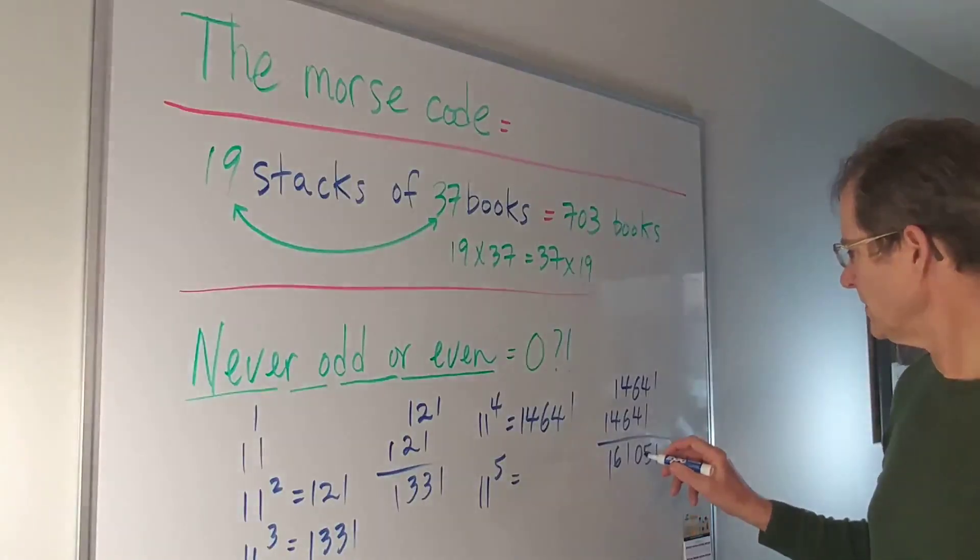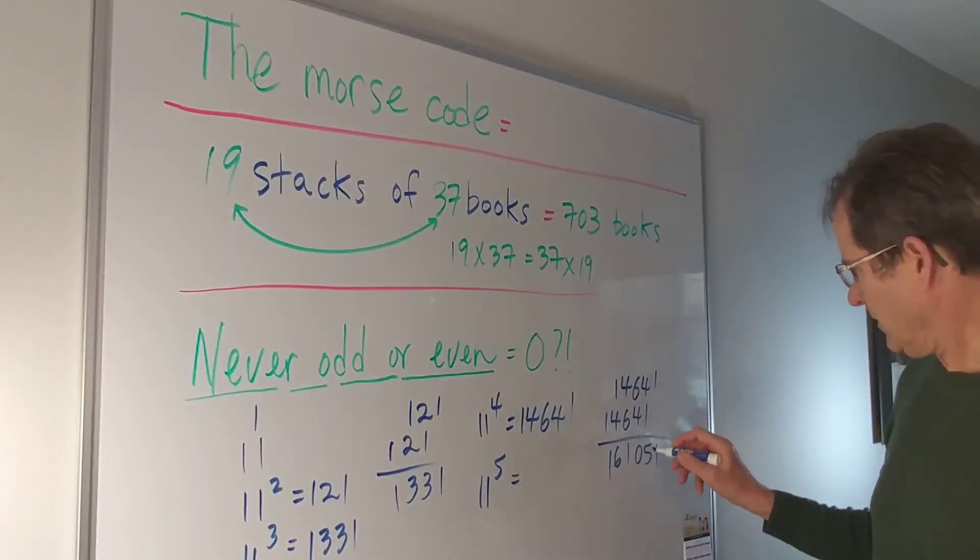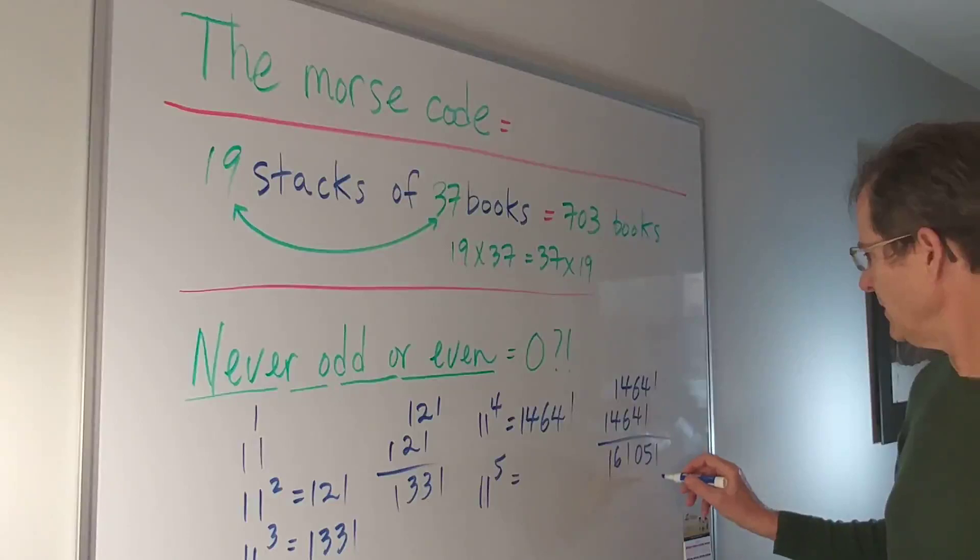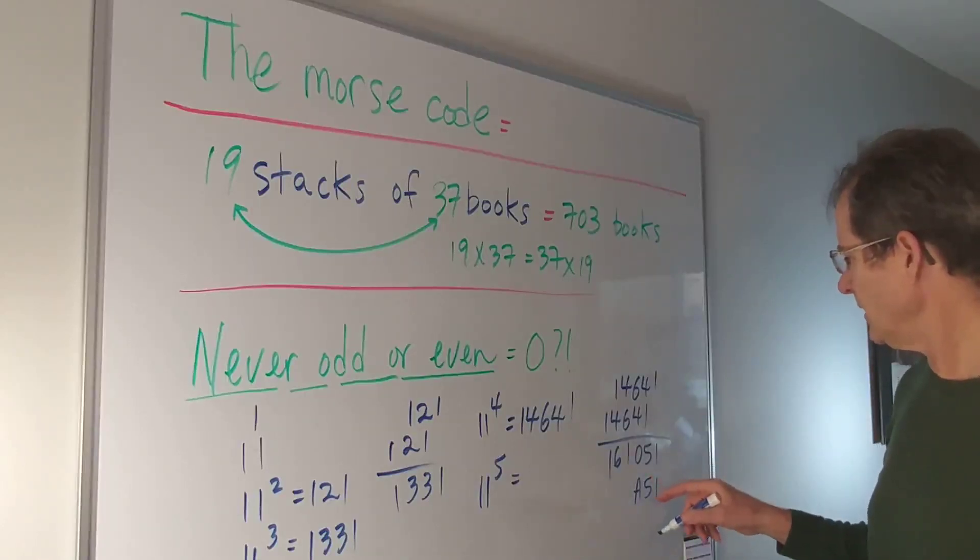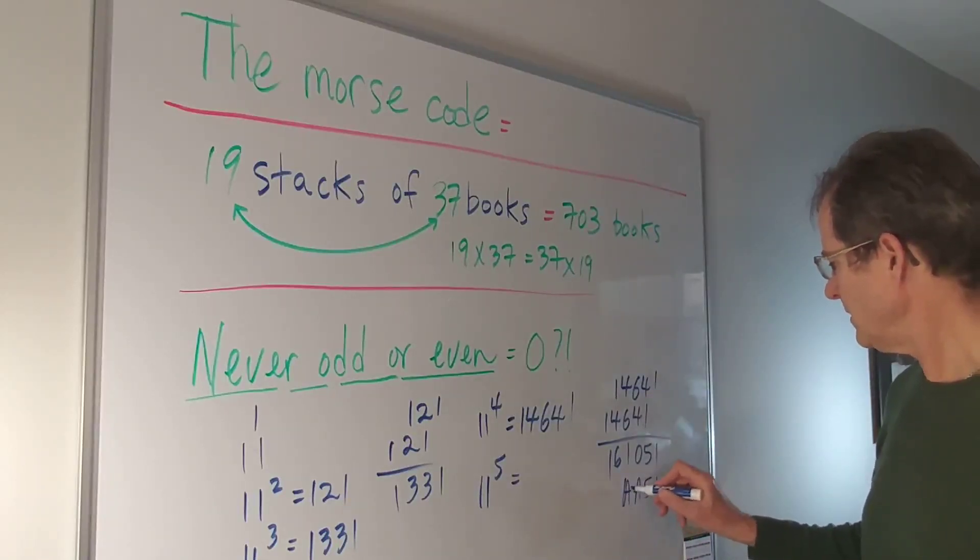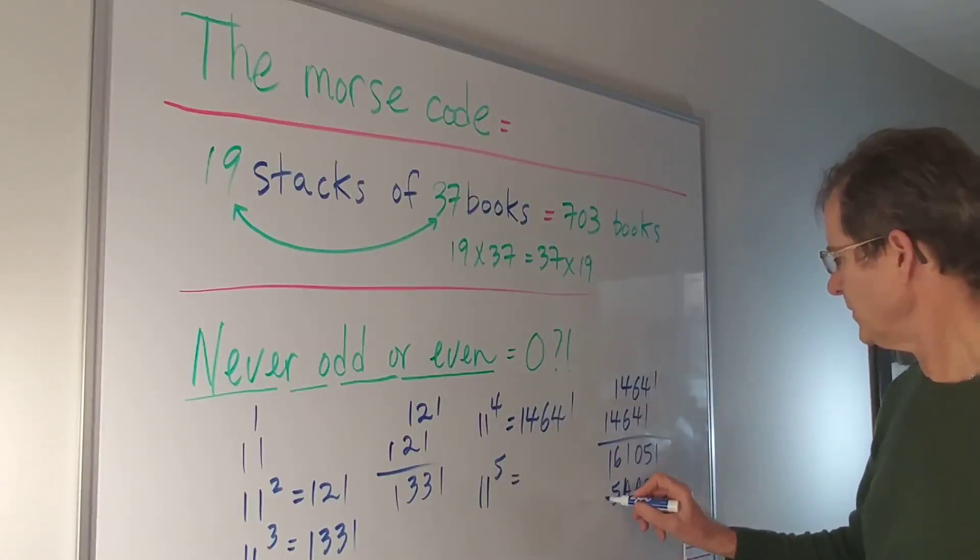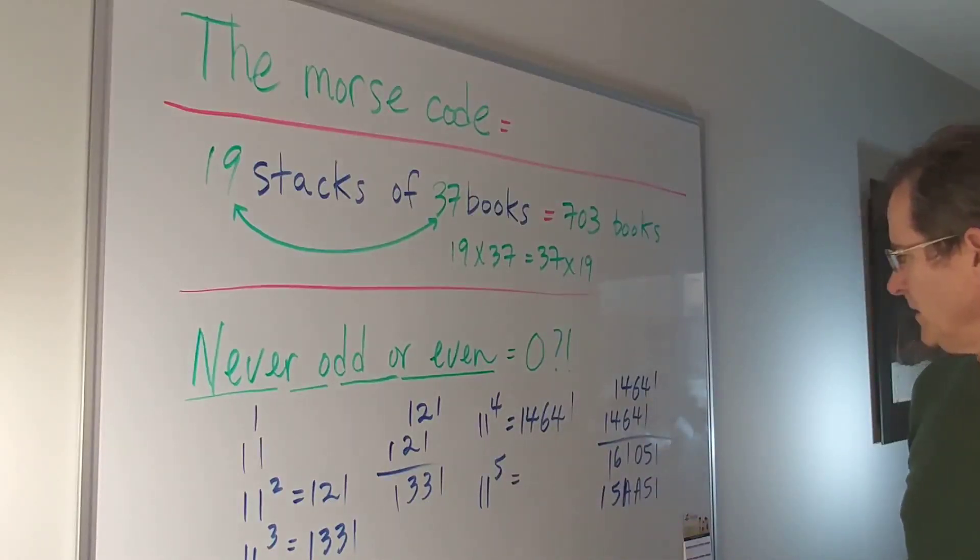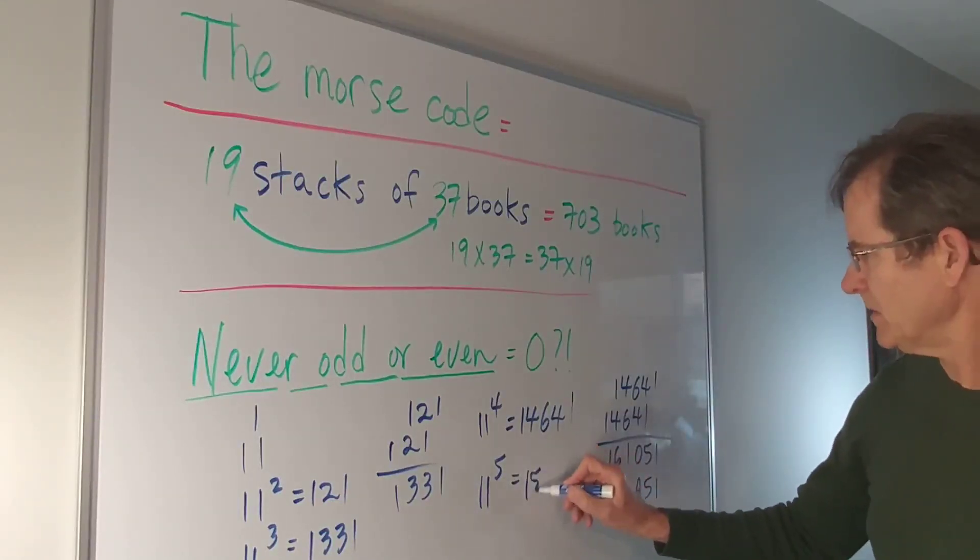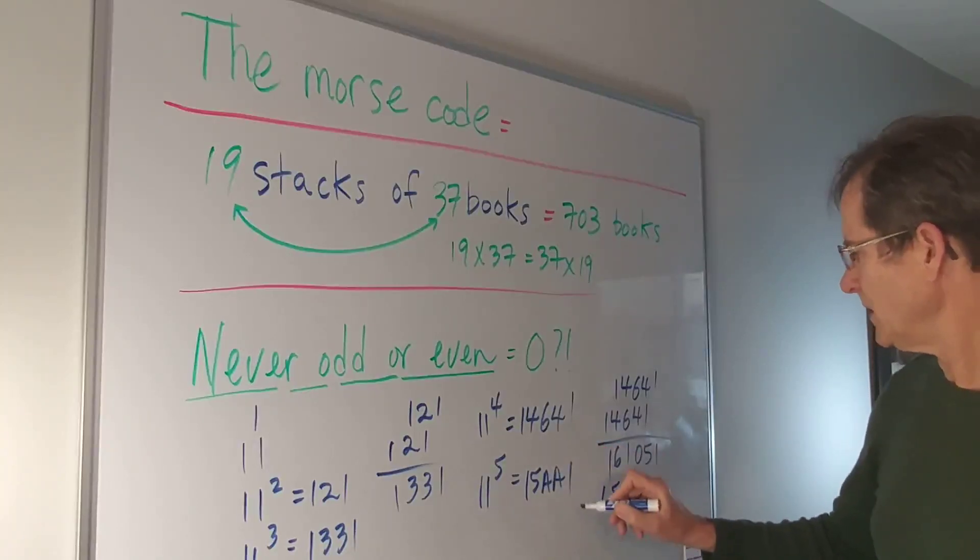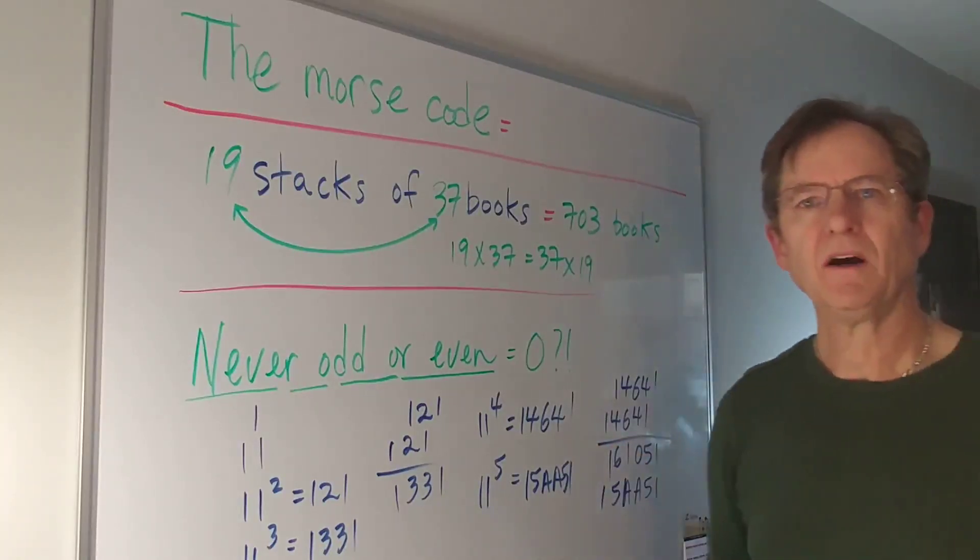But what if we use different symbols for 10? If I use, let's say, the symbol A for 10, like in the hexadecimal system, I don't have to carry. So I get another 10, and sure enough, four plus one plus four is five, and that one there. So we can make this a palindrome number if we use hexadecimal. So give that some thought.